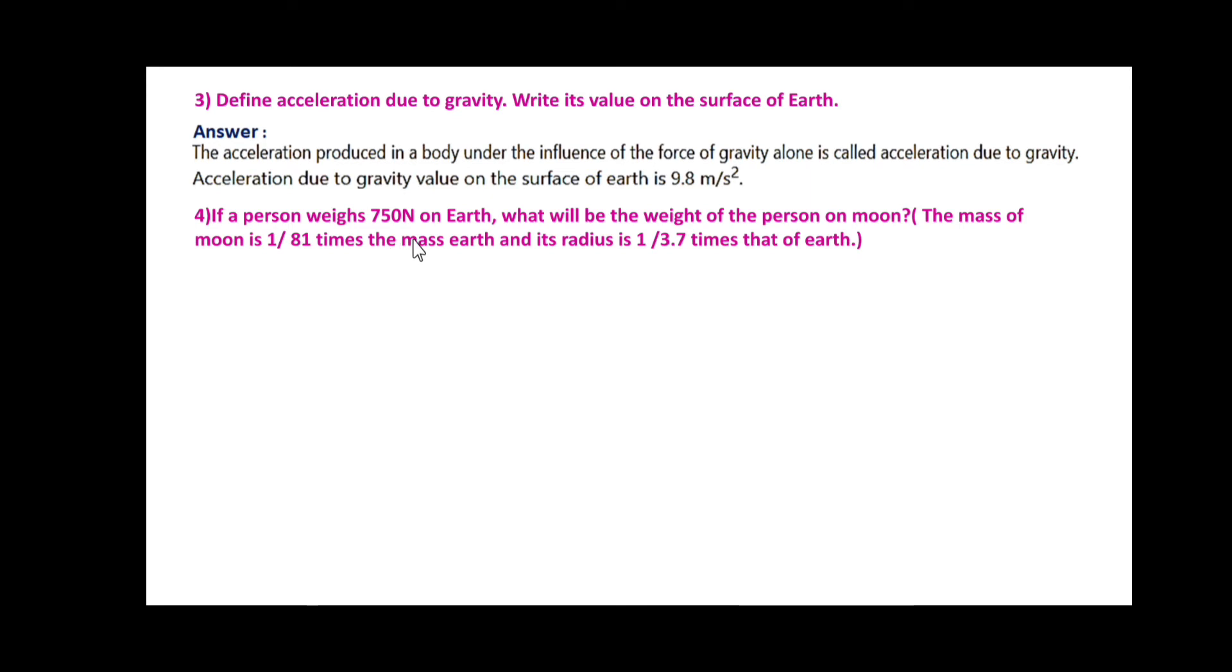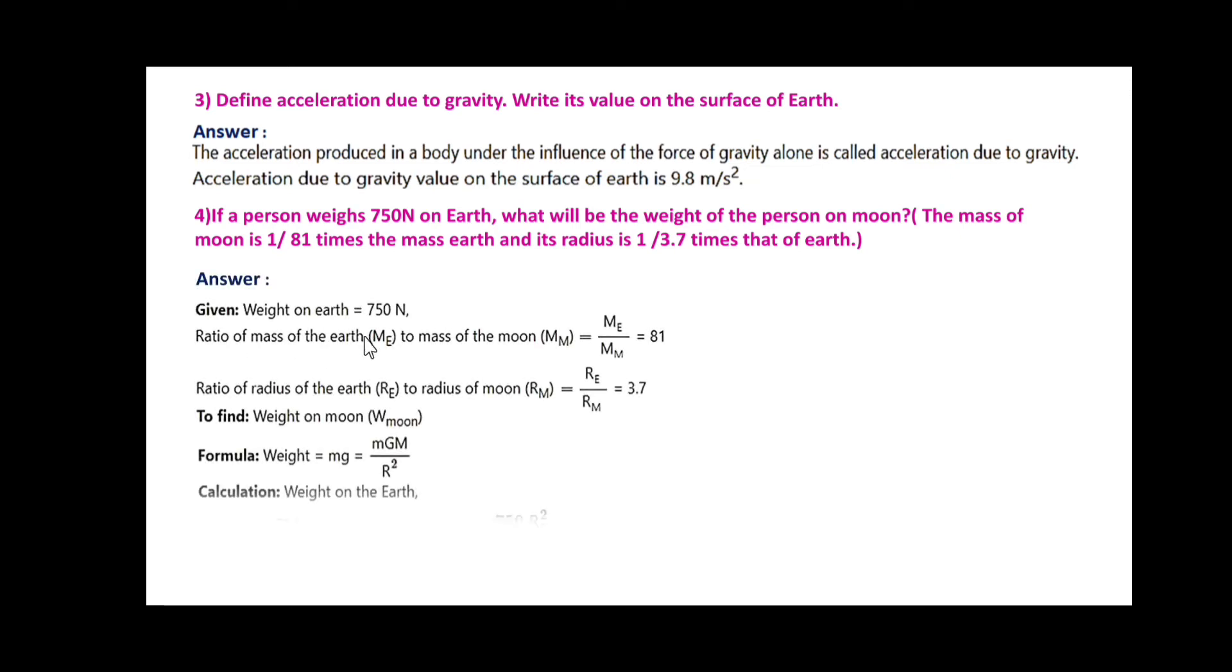If a person weighs 750 N on earth, what will be the weight of the person on moon? The mass of the moon is 1/81 times the mass of the earth and its radius is 1/3.7 times that of earth. Given: Weight on the earth is 750 N. Ratio of mass Me/Mm = 81. Ratio of radius Re/Rm = 3.7. To find: weight on moon.